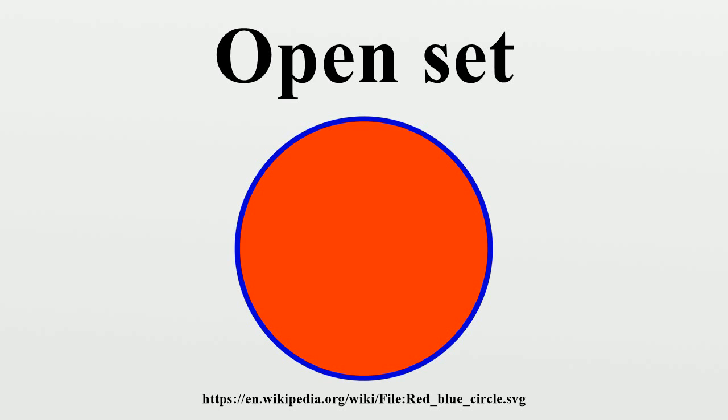Properties: The empty set is both open and closed. The set X that the topology is defined on is both open and closed. The union of any number of open sets is open. The intersection of a finite number of open sets is open.